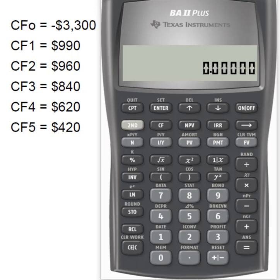I'm back with my BA2 Plus calculator. All I've done on the left is taken the cash flows out of that table format and assigned them to the period in which they occur. Cash flow zero is the beginning of the project and will be my negative cash flow. For the five remaining years I have positive cash flows, so I'm going to use the cash flow worksheet in my calculator.